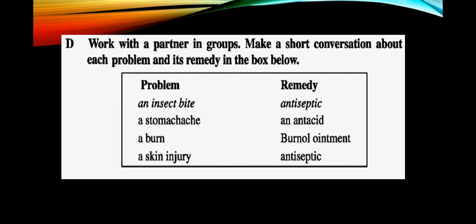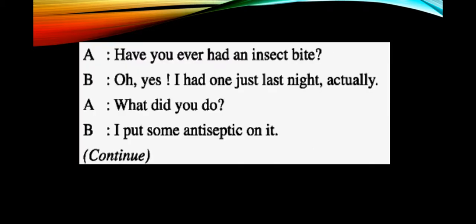Part D: Work with a partner in groups. Make a short conversation about each problem and its remedy in the box below. Problems: an insect bite with antiseptic, stomach ache with antacid, a burn with oil ointment, a skin injury with antiseptic. Example: A: Have you ever had an insect bite? B: Oh yes, I had one just last night actually. A: What did you do? B: I put some antiseptic on it. You can prepare short conversations like this.